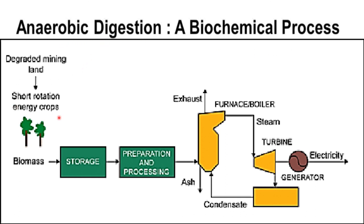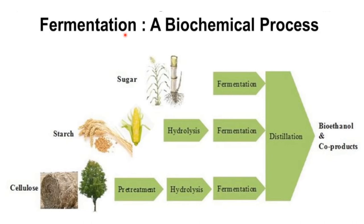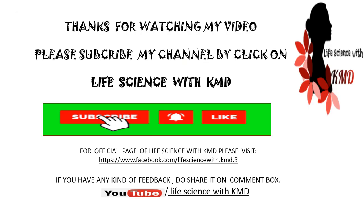In biochemical processes, anaerobic digestion is a series of processes in which microorganisms break down biodegradable material in the absence of oxygen. It is a type of fermentation that converts organic material into biogas, which mainly consists of approximately 60% methane and 40% carbon dioxide, under anaerobic conditions by microbes. The next biochemical process is fermentation — the process of producing alcohol by microorganisms under anaerobic conditions — where ethanol, butanol, and methanol are produced. Microorganisms such as Saccharomyces cerevisiae ferment sugar into ethanol.